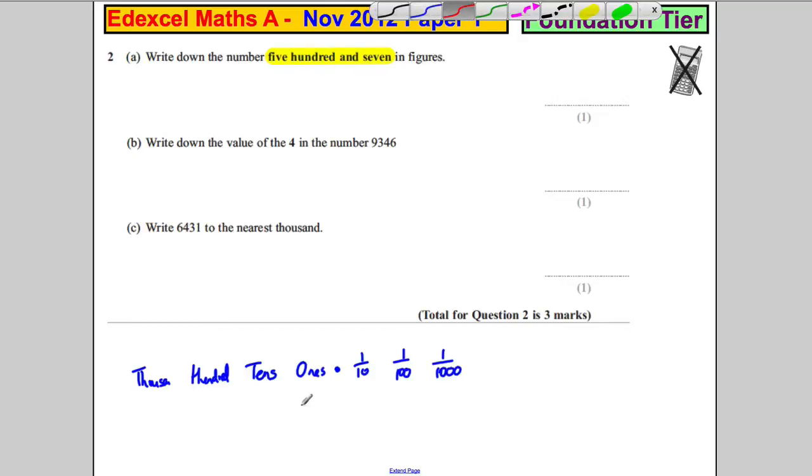507. Well, we've got five hundreds, no tens, and seven ones. So it's as simple as that.